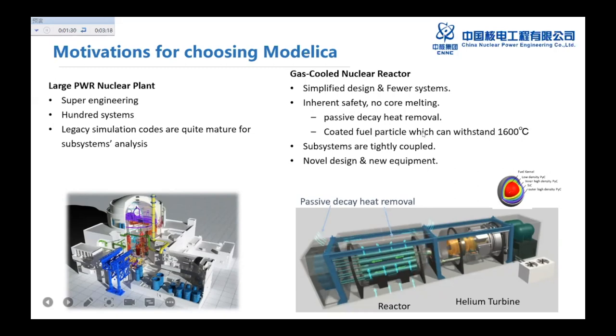And this gas-cooled nuclear reactor we developed is a very simplified design. It has fewer systems. And it has a good inherent safety performance. The core melting cannot happen because the safety is guaranteed by several features. For example, we use better and stronger coated fuel particles like this. And this fuel particle can withstand very high temperature and will not damage.